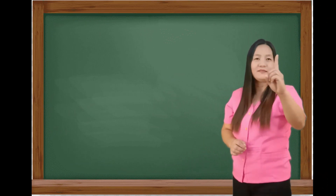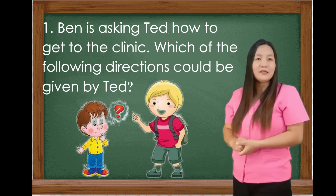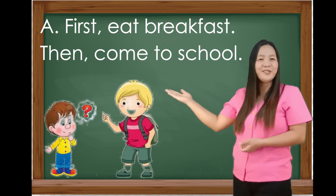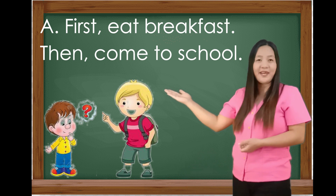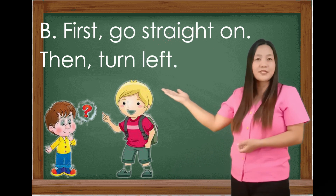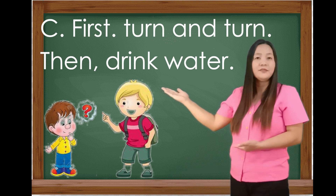Number 1. Ben is asking Ted how to get to the clinic. Which of the following directions would be given by Ted? Letter A: First, eat breakfast. Then, come to school. Letter B: First, go straight on. Then, turn left. And Letter C: First, turn and turn. Then, drink water.